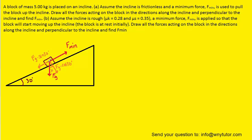Once we have the two components labeled, we can remove the original Fg force because we want forces directed along the incline and perpendicular to it. Fg·sin(30°) is along the incline and Fg·cos(30°) is perpendicular to it.